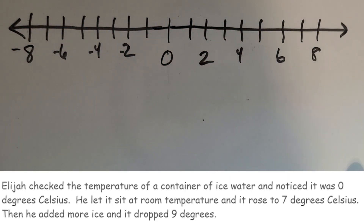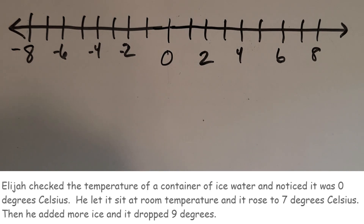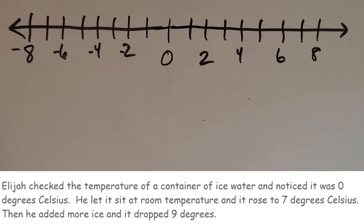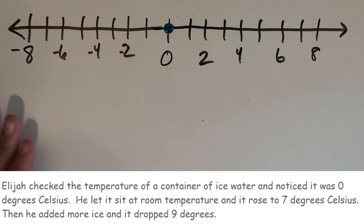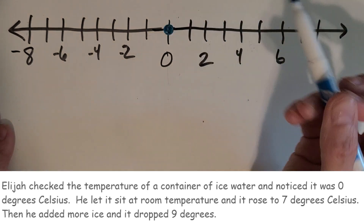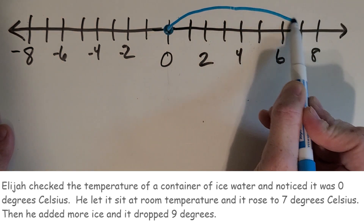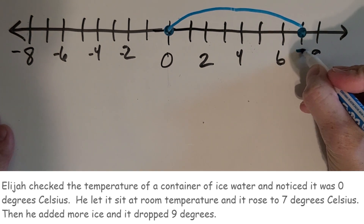Our next problem: Elijah checked the temperature of a container of ice water and noticed it was zero degrees Celsius. He let it sit at room temperature and it rose to seven degrees Celsius. Then he added more ice and it dropped nine degrees. So he first looked at the temperature and it was zero — I'm going to put my dot there. Then it rose to seven degrees, so I'm going to make a big jump to seven.